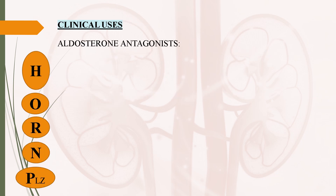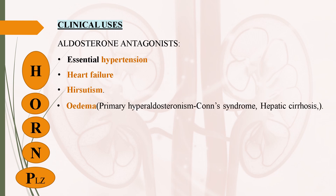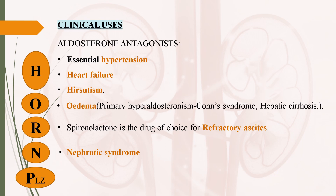Coming to clinical uses of aldosterone antagonists: you can remember these uses with the mnemonic HORN PLEASE, where H stands for essential hypertension, heart failure, and hirsutism; O stands for edema; R stands for refractory ascites; N stands for nephrotic syndrome; and PLEASE stands for PCOS. In case of essential hypertension, these drugs are given in combination with other diuretics to potentiate their antihypertensive effect and reduce hypokalemia. In case of heart failure, spironolactone is administered along with ACE inhibitors to reduce renal loss of potassium and magnesium and increase survival.